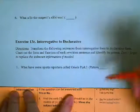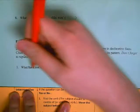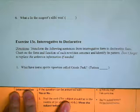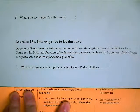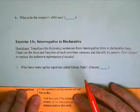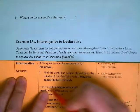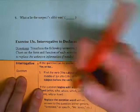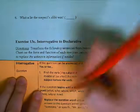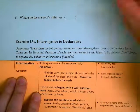The first thing we look at is: is this a sentence that can be answered with yes or no? 'What have some sports reporters called Oriole Park?' Yes? That doesn't make any sense. So if it's not a question that could be answered with yes or no, then you skip that and move on to: this must then be a question that starts with a WH-question word.